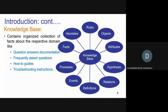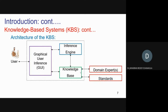Next, what is a knowledge-based system and how exactly does it look? This is a simple architecture. Inside the dotted rectangle there are three boxes: first is a GUI (graphical user interface), connected with the inference engine at the top, and at the bottom it is connected with the knowledge base. The inference engine and knowledge base are connected to each other. Those three together form the knowledge-based system.